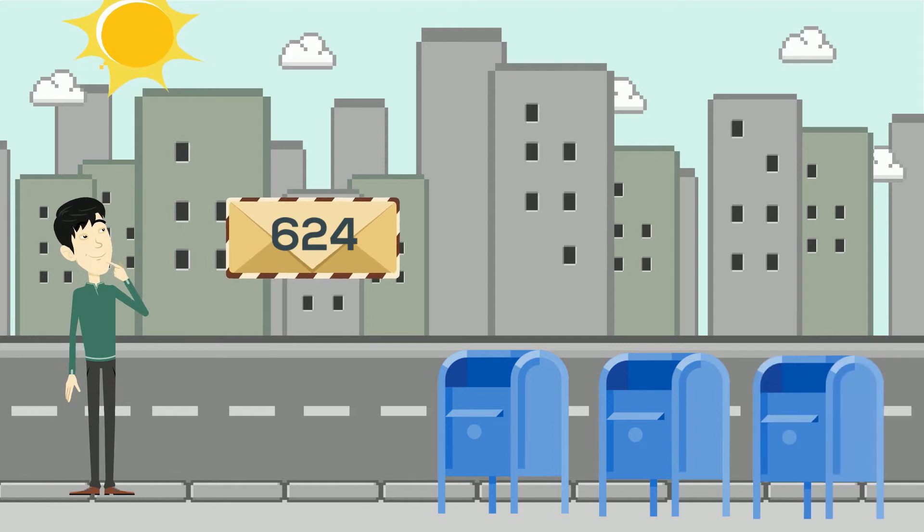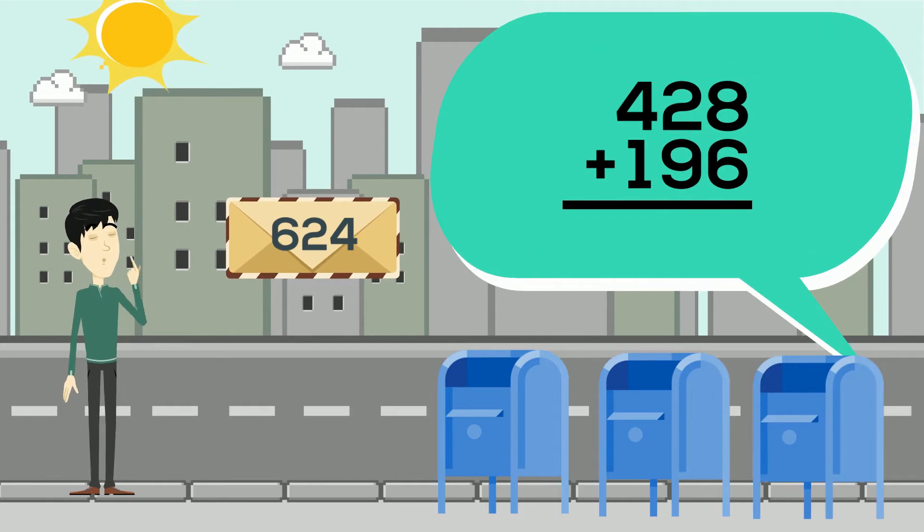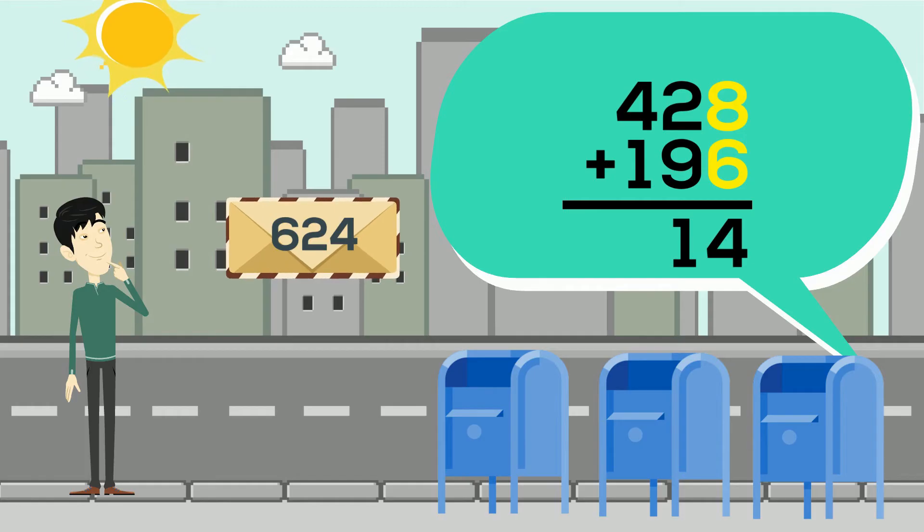We're down to our last mailbox. It says 428 plus 196. Starting with the ones place, we have 8 plus 6, which is equal to 14. But since we can only write one digit per place value, we only write 4 below the ones place, while 1 goes with the tens column.